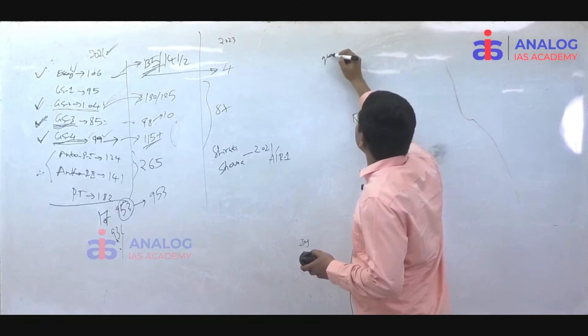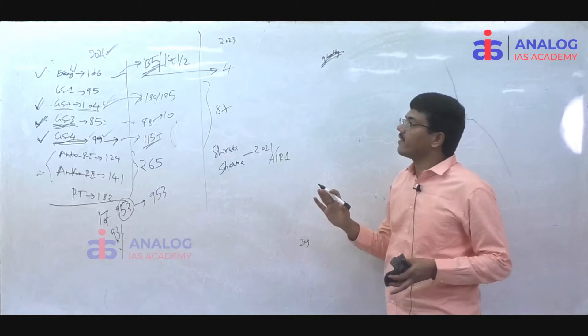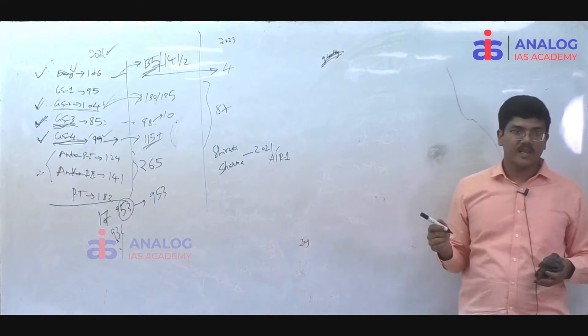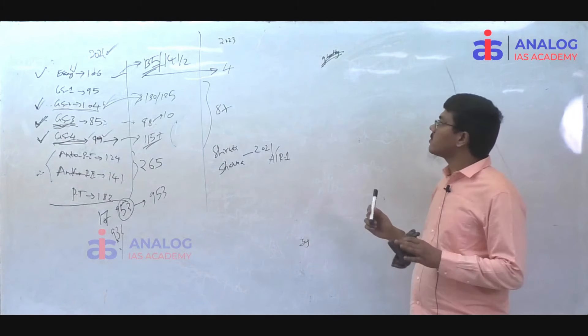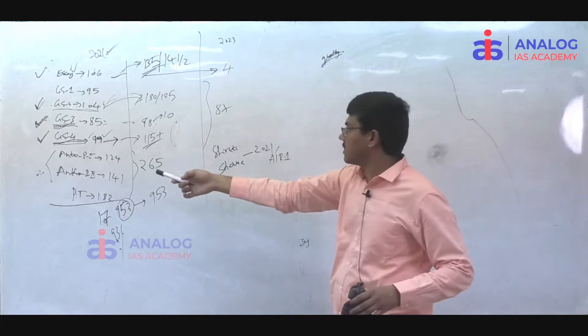Quantity is also important. There is one friend of mine, Raventh. In 2022 he got IAS. That guy's GS score was very good, GS 810 if I remember, and Ethics. This is what I'm saying.